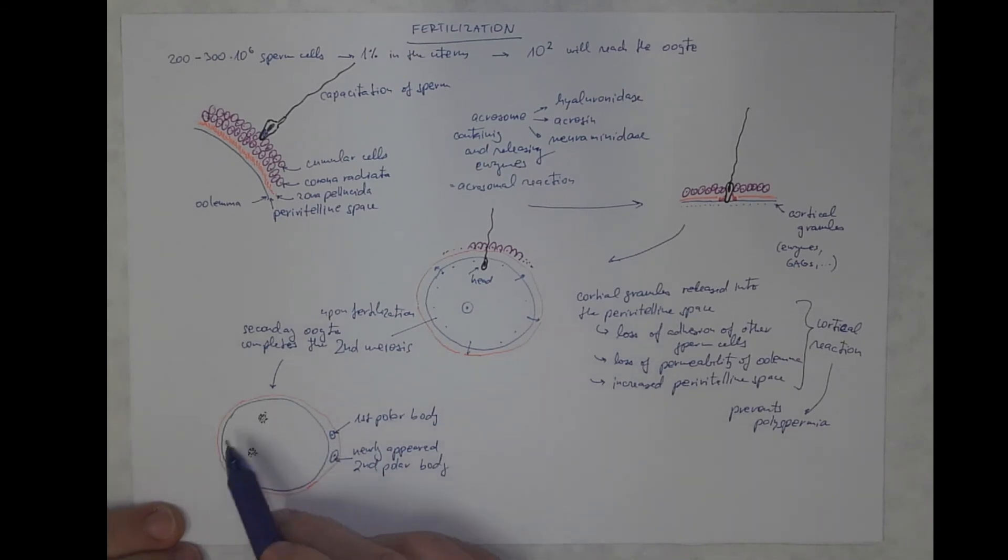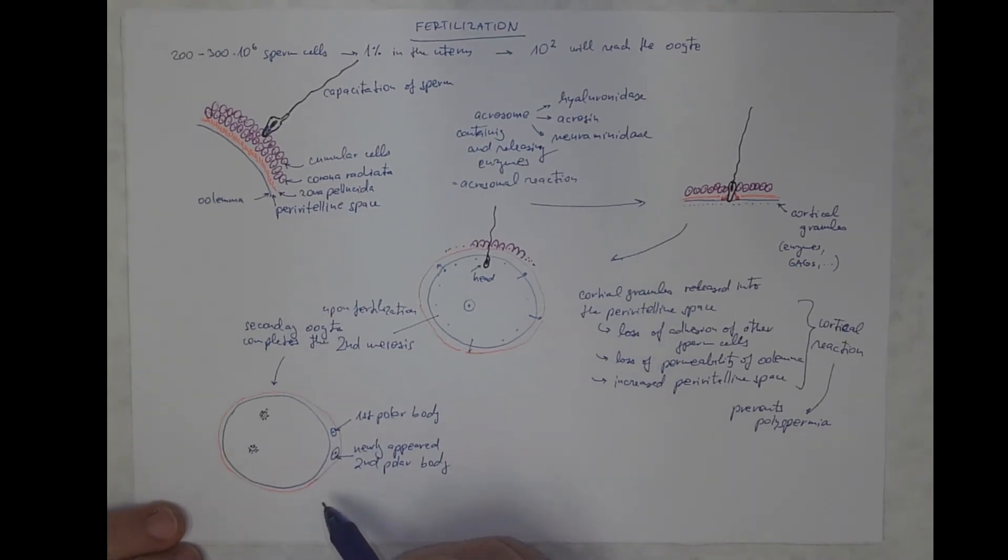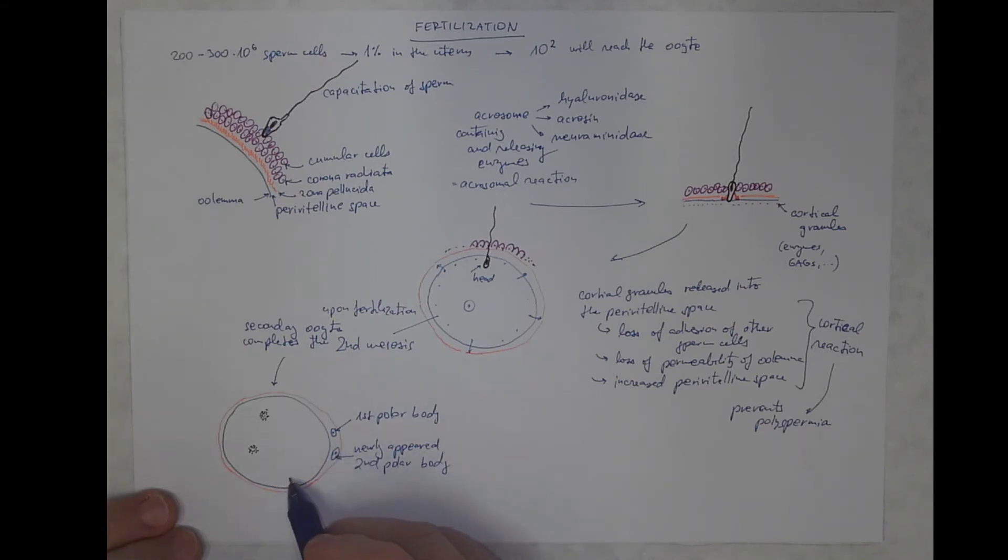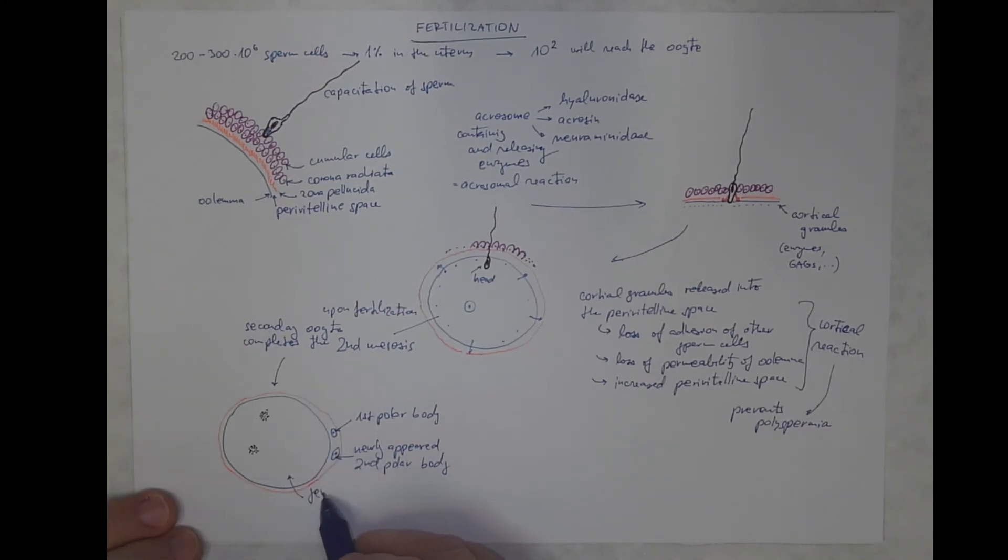So you can actually see, if you observe this process using a microscope, you can actually see that really there was a fertilization. That was a completion of the second meiosis.